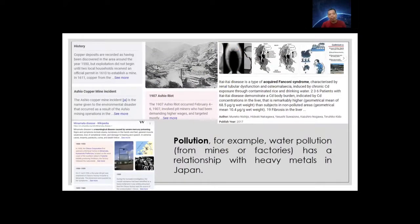Pollution — for example, water pollution from mines or factories — has a relationship with heavy metals. In Japan, the Ashio copper mine resulted in agricultural damage. The Itai-Itai disease was reported along the Jinzu River. As for factory pollution, Minamata disease around Minamata Gulf resulted in bioaccumulation, and the second Minamata disease around the Agano River is ascribed to factory maintenance. However, some heavy metals play a good role in environmental maintenance.